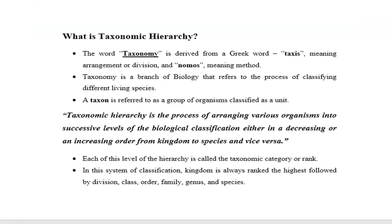What is taxonomic hierarchy? First, we should know about taxonomy. The word taxonomy is derived from the Greek words 'taxis' and 'nomos.' Taxis means arrangement or division, while nomos means method. Therefore, taxonomy is a branch of biology that refers to the process of classifying different living species. A taxon is referred to as a group of individuals or organisms classified as a unit.